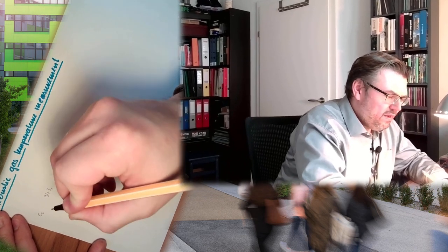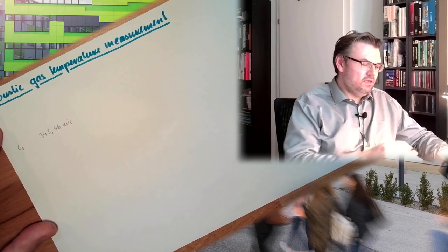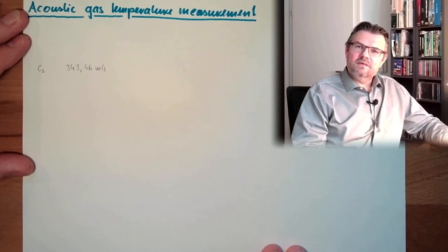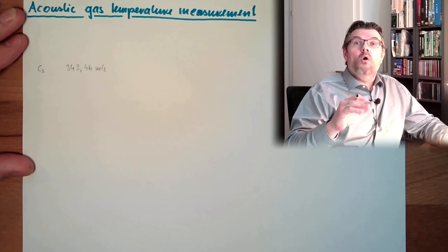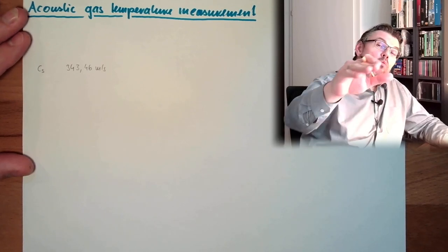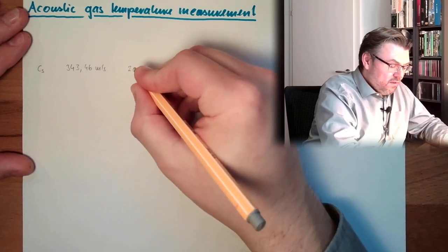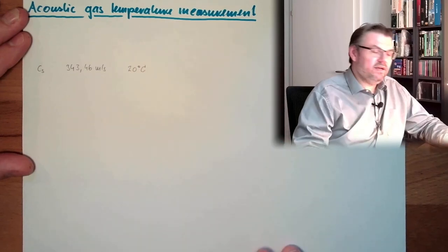So this is what we usually read in some tables. Speed of sound, Cs, is 343.46 meters per second. This is what we read. In which circumstances? Well, we say norm circumstances. This means one pressure of one atmosphere and at 20 degrees Celsius. We have exactly this.